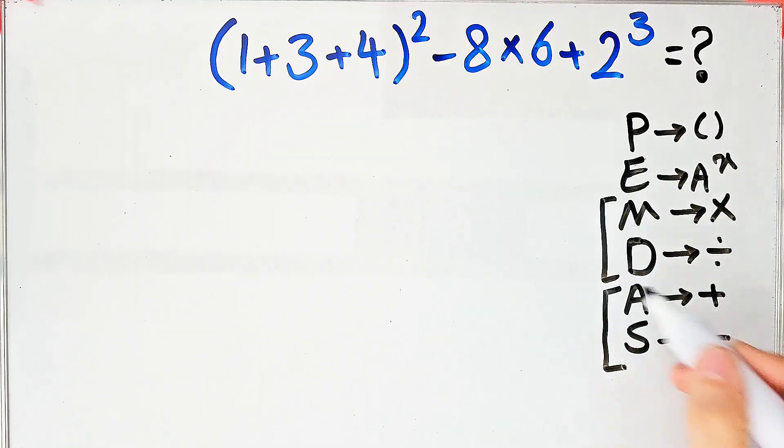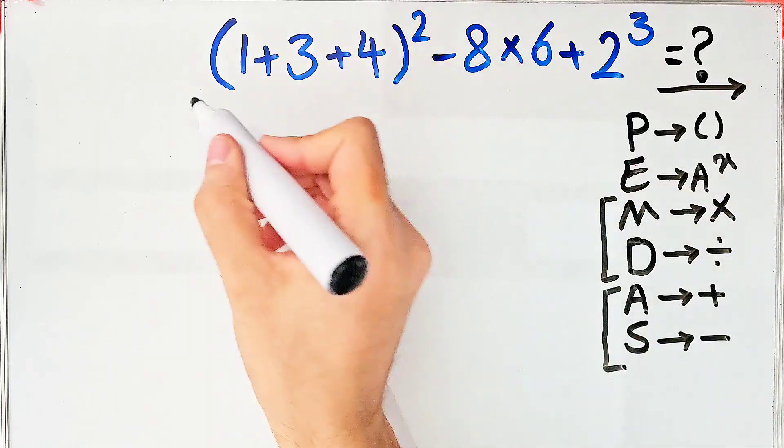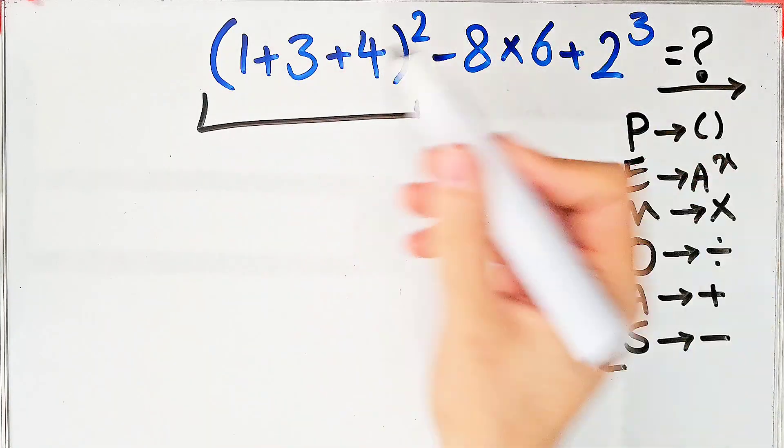When we have both in an expression we start from the left and simplify the question. According to the PEMDAS rule first we simplify these parentheses. One plus three plus four equals eight.